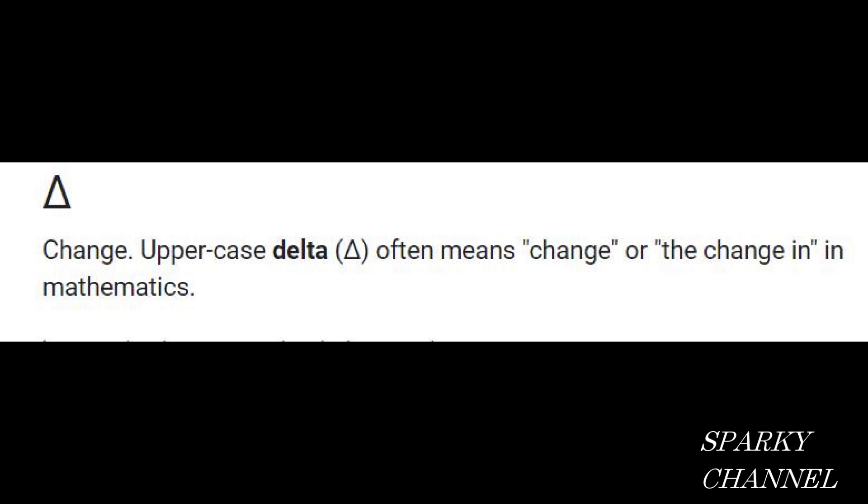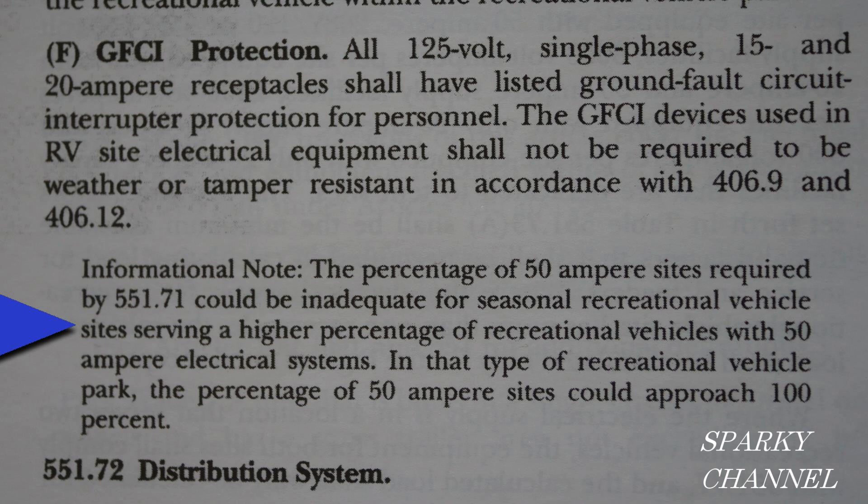In case you're curious, the uppercase delta symbol often means change, or the change in, in mathematics. The indented note with slightly smaller text is an informational note, also called a fine print note, which contains explanatory material intended to clarify a rule or give assistance, but it is not a code requirement. The fine print notes often use the term 'may,' but never 'shall.'